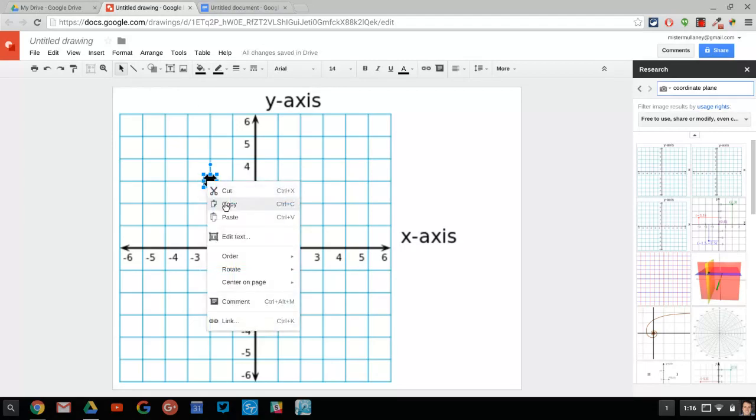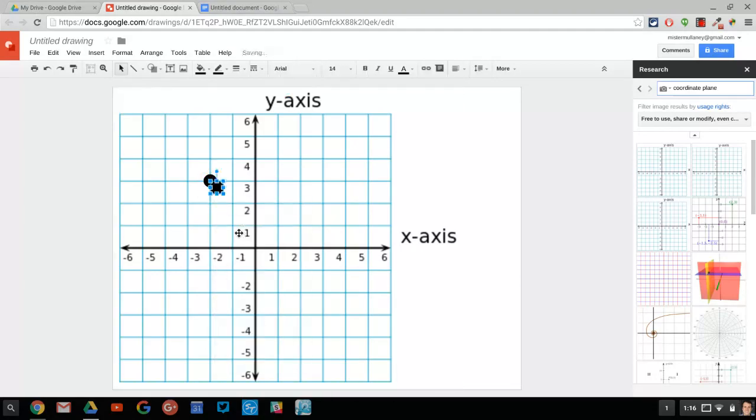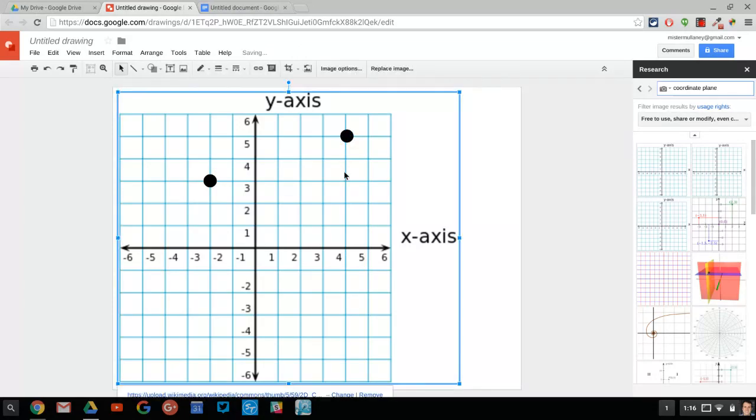If I right-click and copy, now I will paste that point, and now I have two points, and let's throw this one up here. Let's say four and five at the four, five point. So now I have two points.